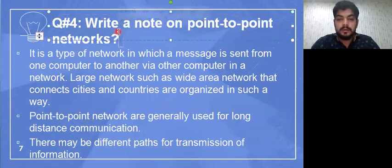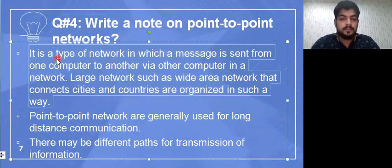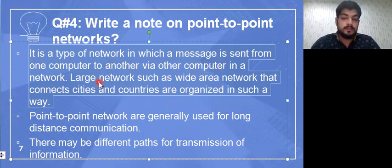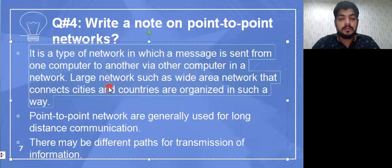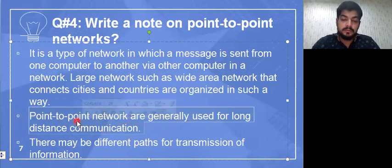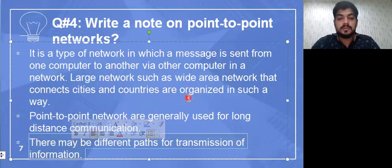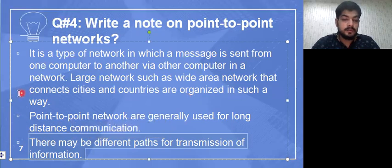The fourth question is: write a note on point-to-point networks. A point-to-point network is a type of network in which a message is sent from one device to another via other computers in the network. Large networks such as wide area networks that connect cities and countries are organized in this way. Point-to-point networks are generally used for long distance communication, and there may be different paths for transmission of information.